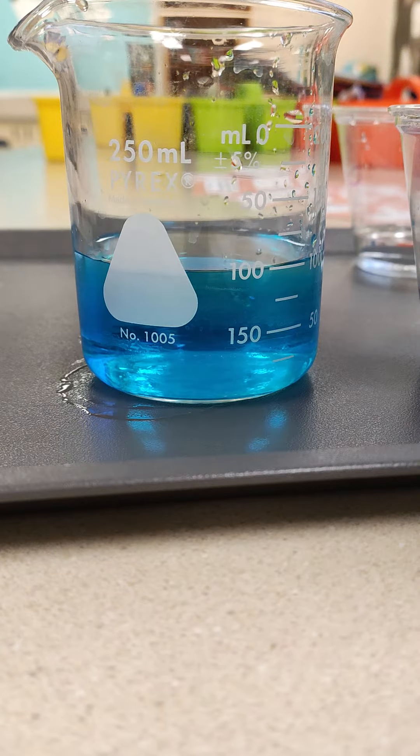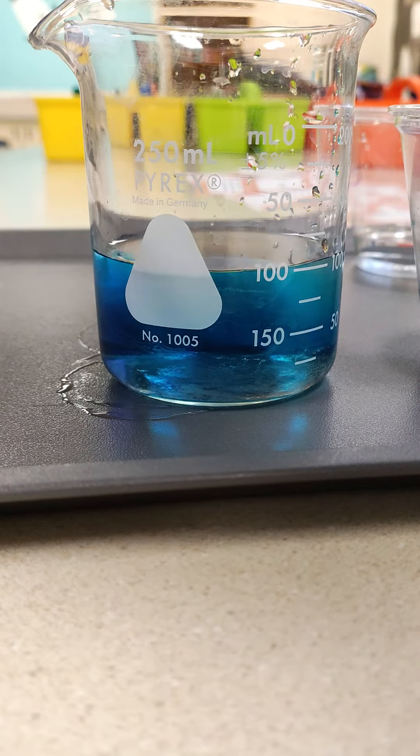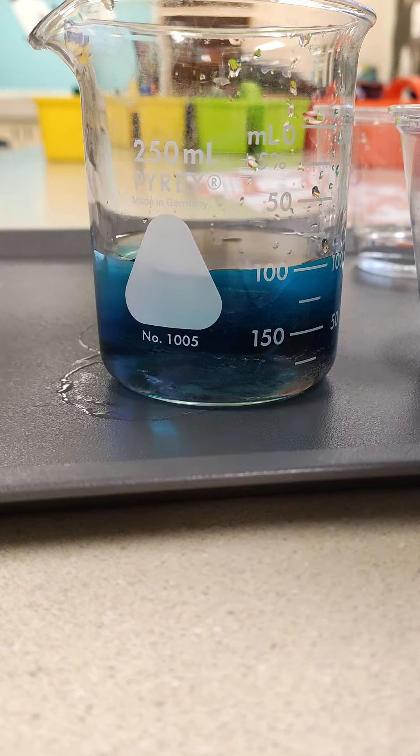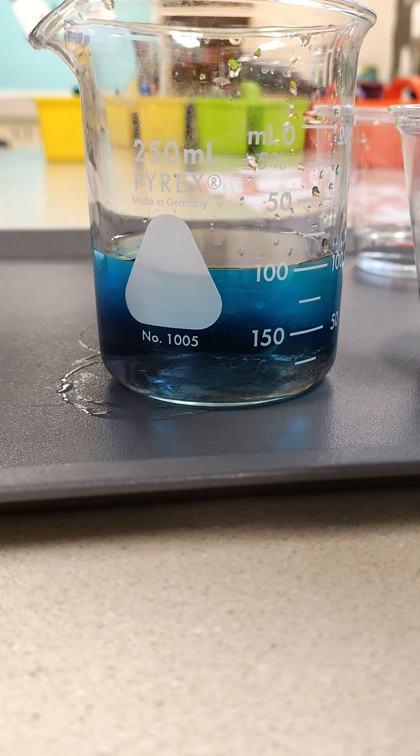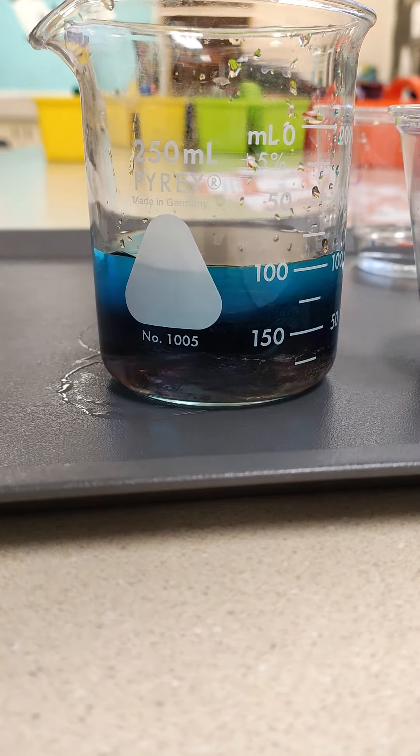Now we're going to get the red water. We'll stir it up a little bit and scoop some up in the dropper. Put it in through the inside of the beaker and observe where it's going in relation to the other liquids.